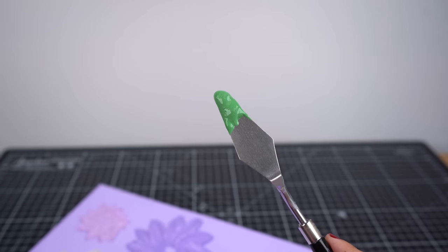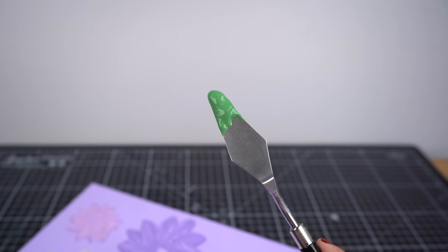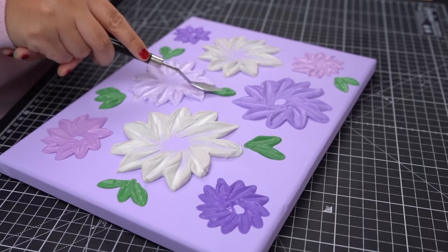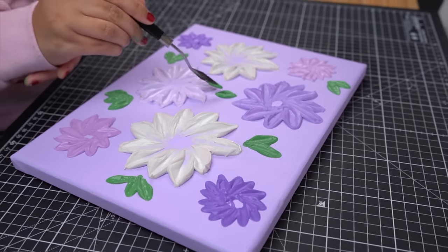We'll be using the same technique for our leaves. Grab a glob of your Too Thick paint mixture and apply medium pressure followed by a sliding motion. I'll be adding these little leaves in throughout all the empty spaces.